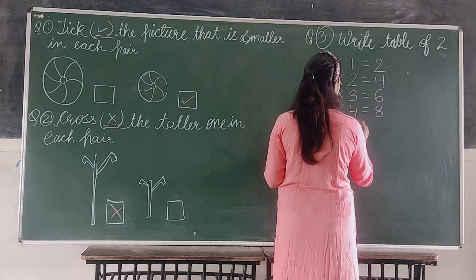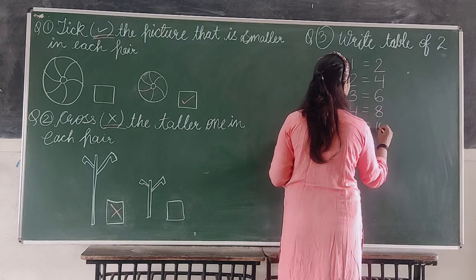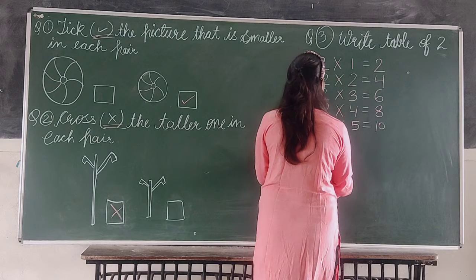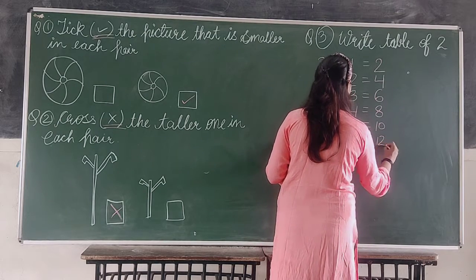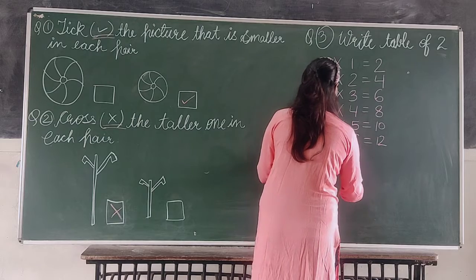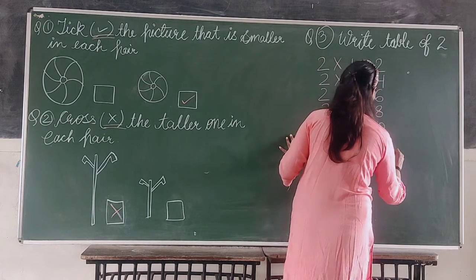Two into five equals to ten. Two fives are ten. Two into six equals to twelve. Two sixes are twelve.